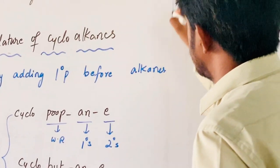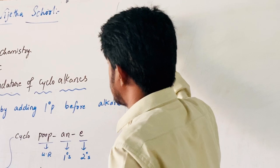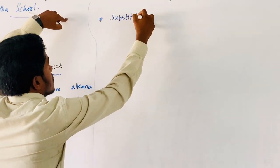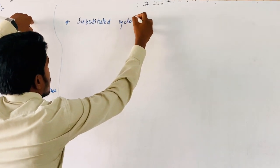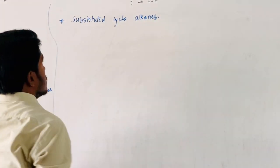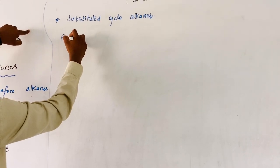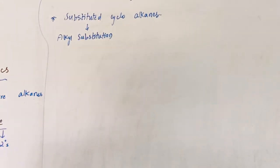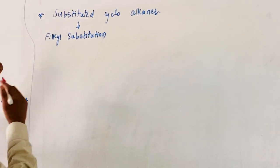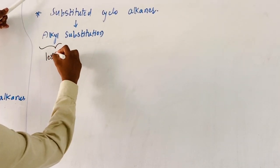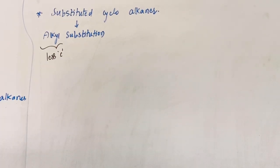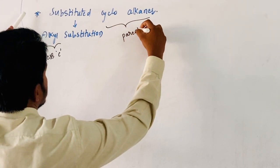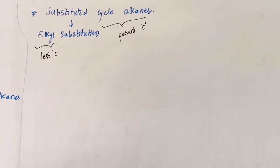Coming to the second rule: if there is a substituted cycloalkane, and the alkyl substituent has a lesser number of carbon atoms than the ring, then the cycloalkane ring is considered the parent chain — that is, the main chain.